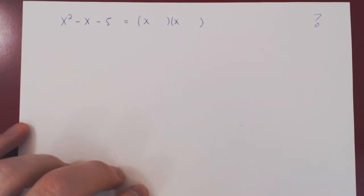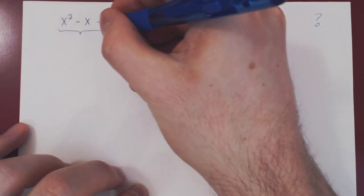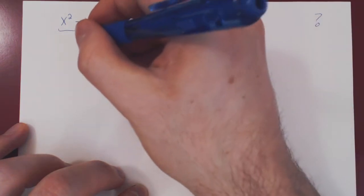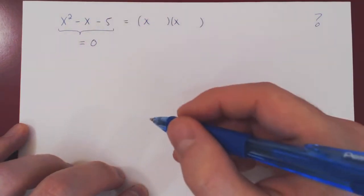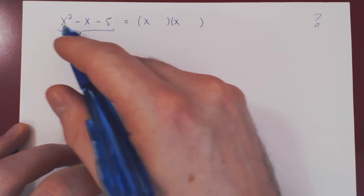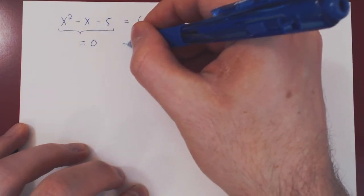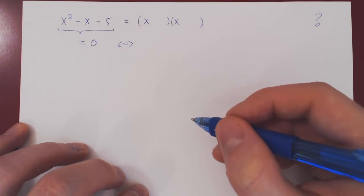Then we fall back on the quadratic formula. We know that to factor a quadratic, all we need are the zeros. But to solve an equation of this type, we can of course fall back on the quadratic equation.